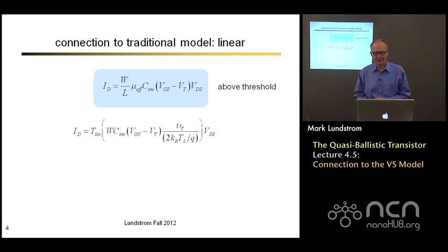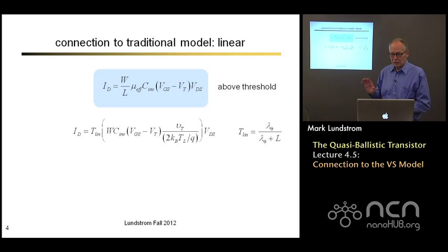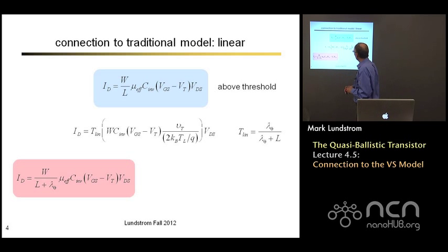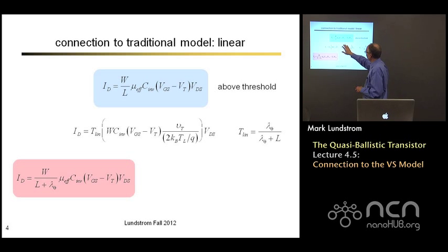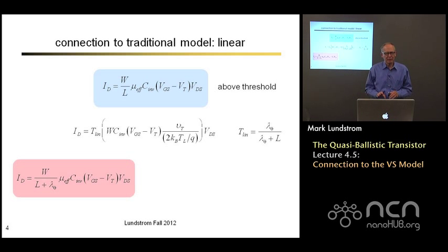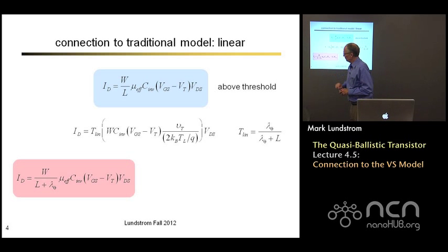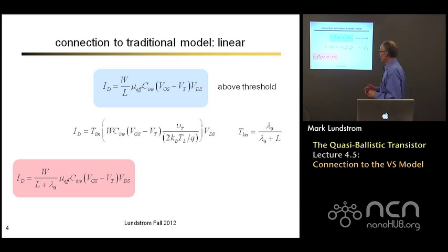Key parameters are the transmission and the unidirectional thermal velocity. The transmission is related in a simple way to the mean free path. Using that connection, I can express the transmission in terms of the mean free path and get something very simple. With a little algebra, one of the things that comes out is the effective mobility, and on the bottom is mean free path plus channel length. So I get an expression that looks very much like the traditional expression, but instead of the current being proportional to W over L, it's proportional to W over (L plus the mean free path). As channel length scales toward zero, we don't have to worry about W/L blowing up — it just goes to W over mean free path. That's the ballistic limit.